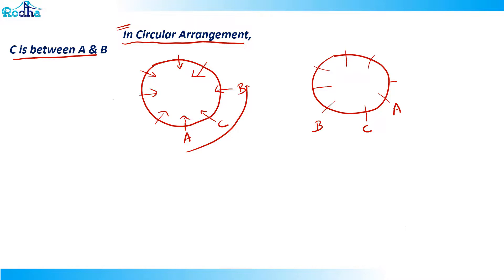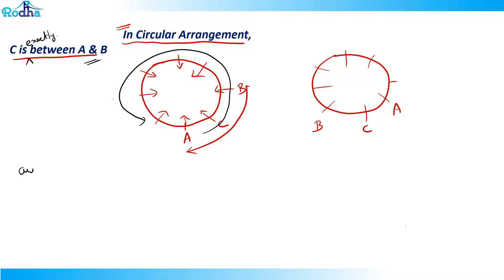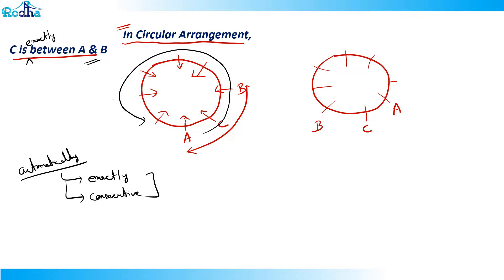In circular arrangement there are no ends, so the rules that apply at the ends in linear arrangement don't apply here. If you try to take a different meaning of 'between' in circular, you end up with no valid possibility. Going right continuously in a circle eventually brings you to someone's left. So in circular arrangement, 'C is between A and B' automatically means exactly between — and also means they are consecutive. These are the key differences we'll apply in the next sets on linear and circular arrangements.